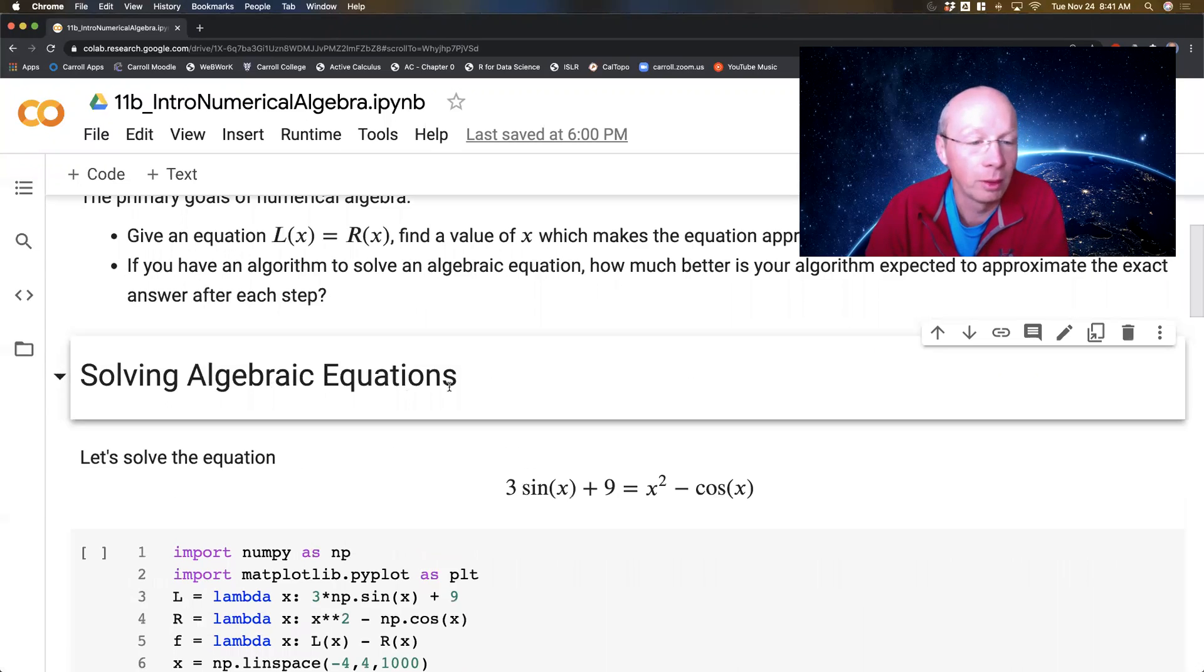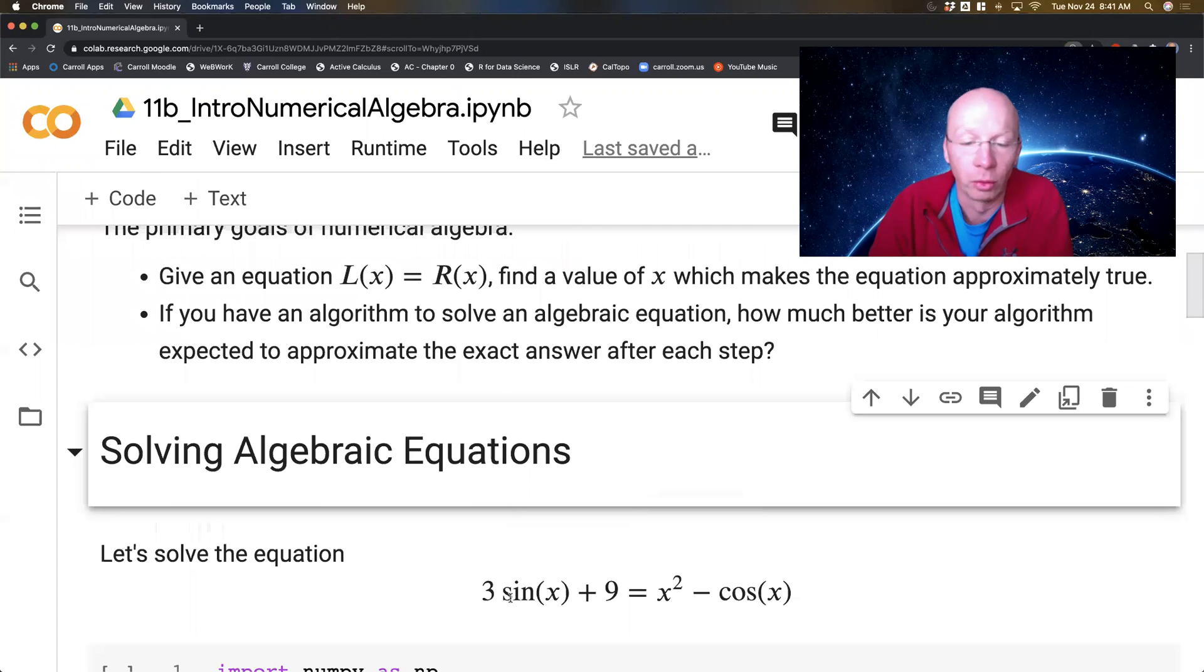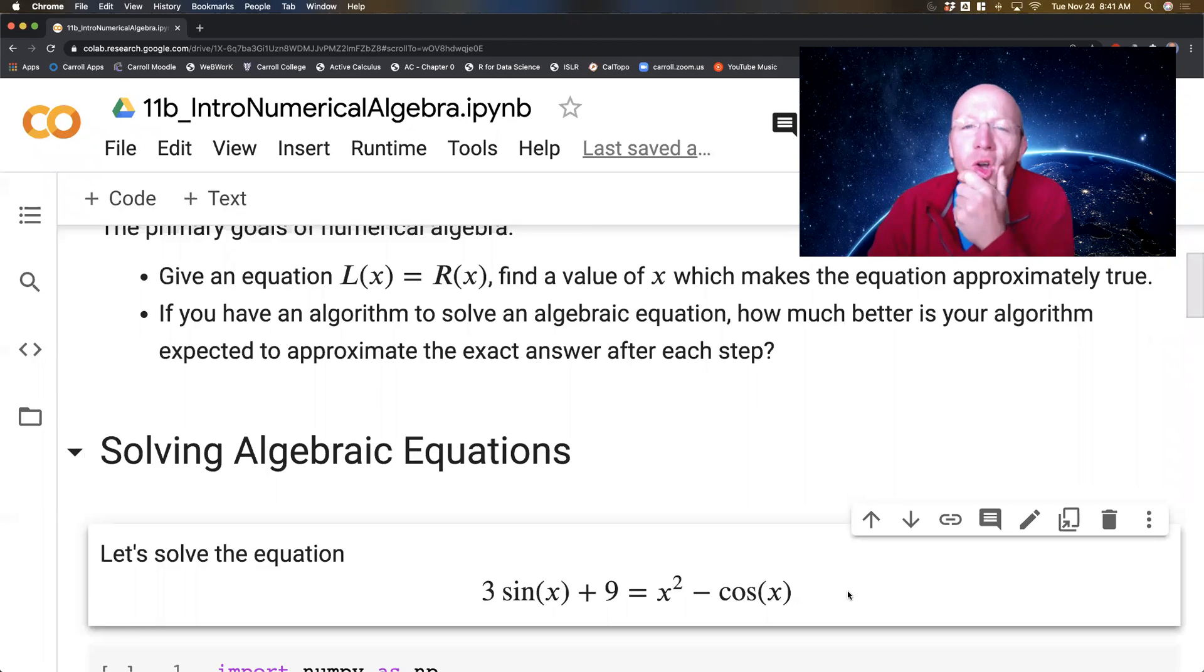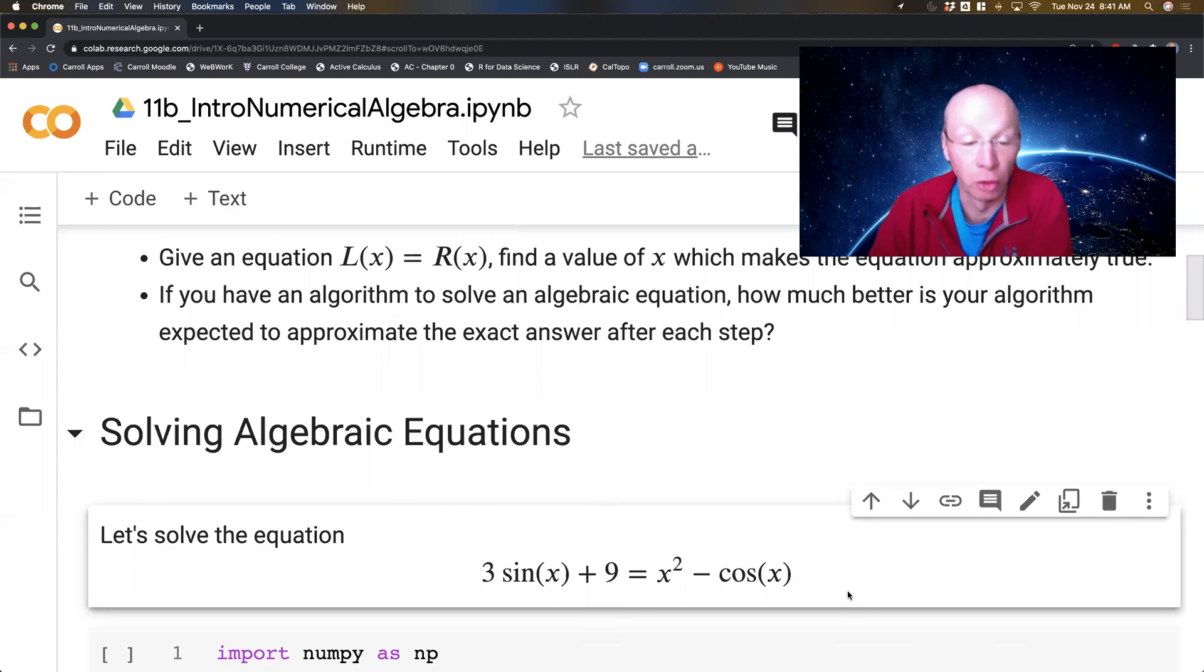So let's look at some examples here. Let's say we want to solve this equation: 3 sin(x) + 9 equals x squared minus cos(x). Stop and think for a second. Could you do anything to solve this by hand? I mean, just think about every technique that you know from algebra—could you solve this by hand? I venture a guess the answer is no, of course.